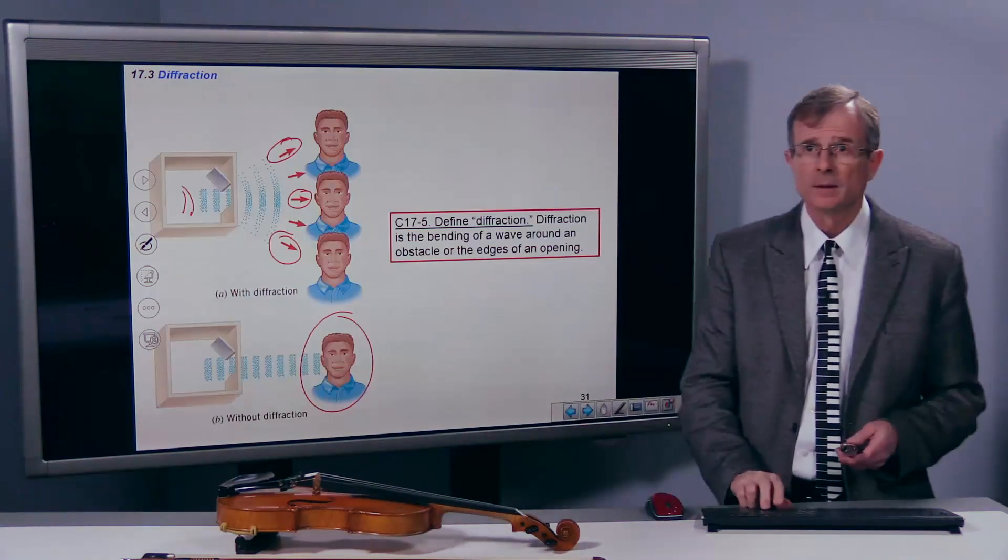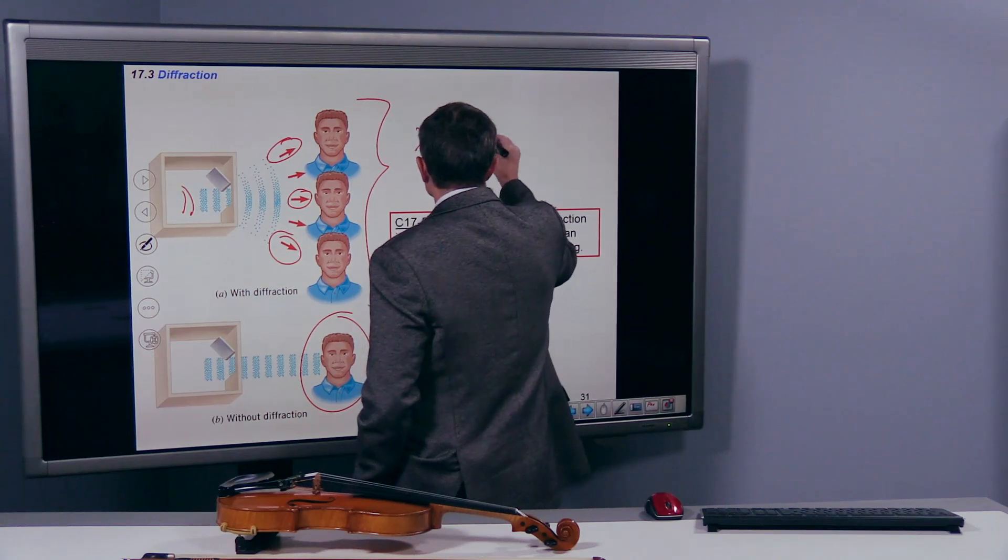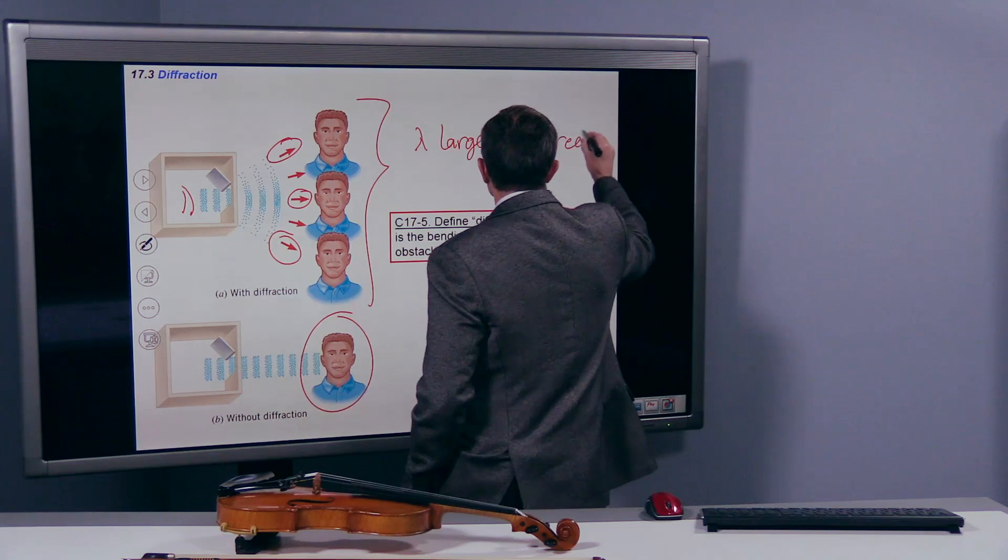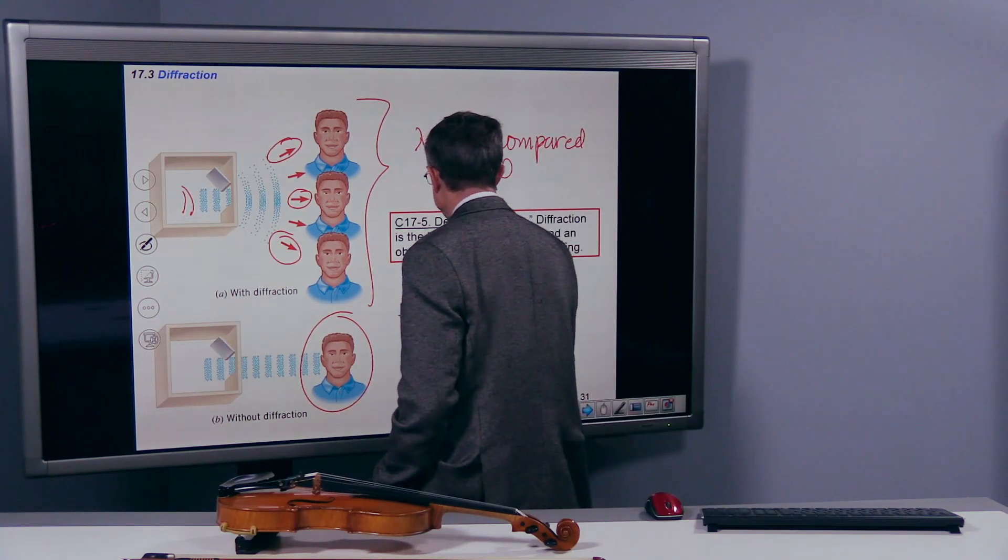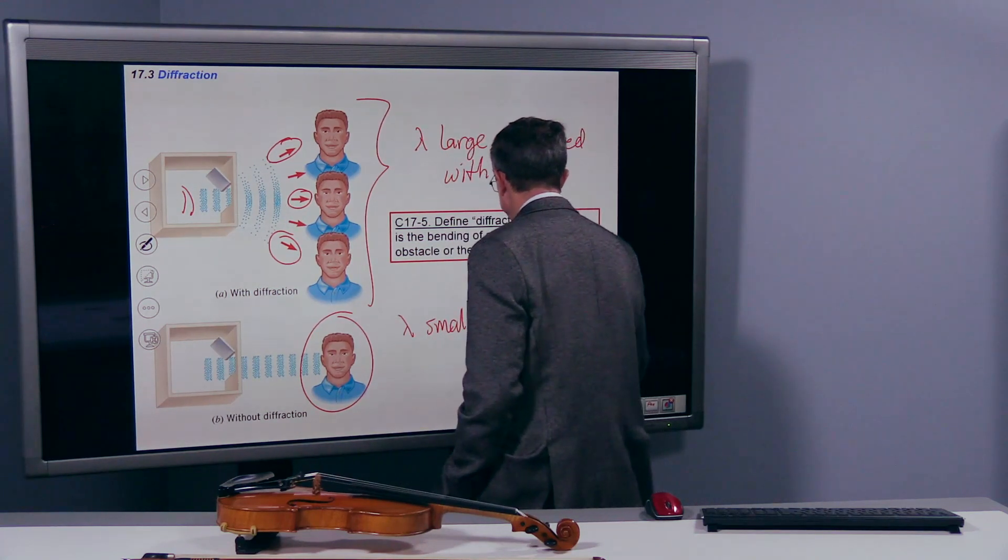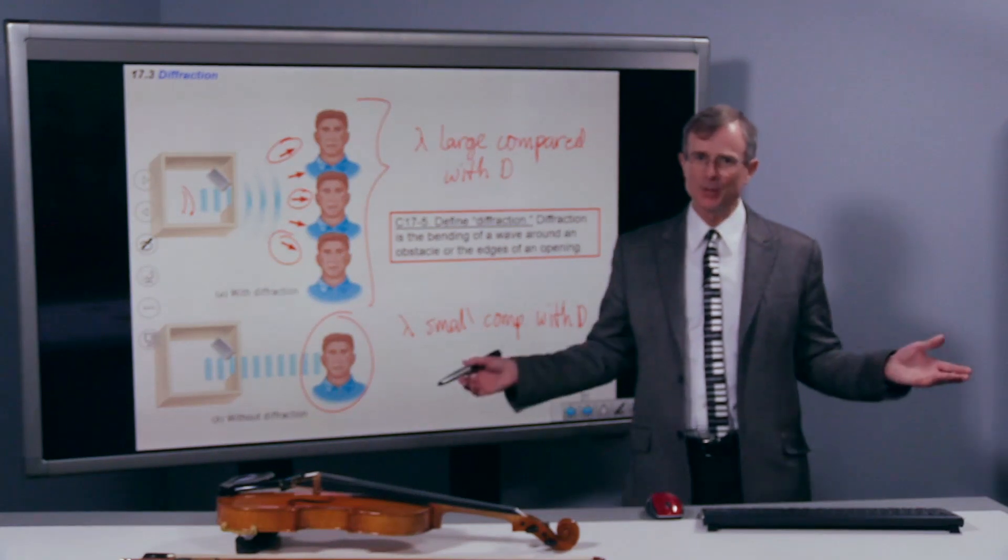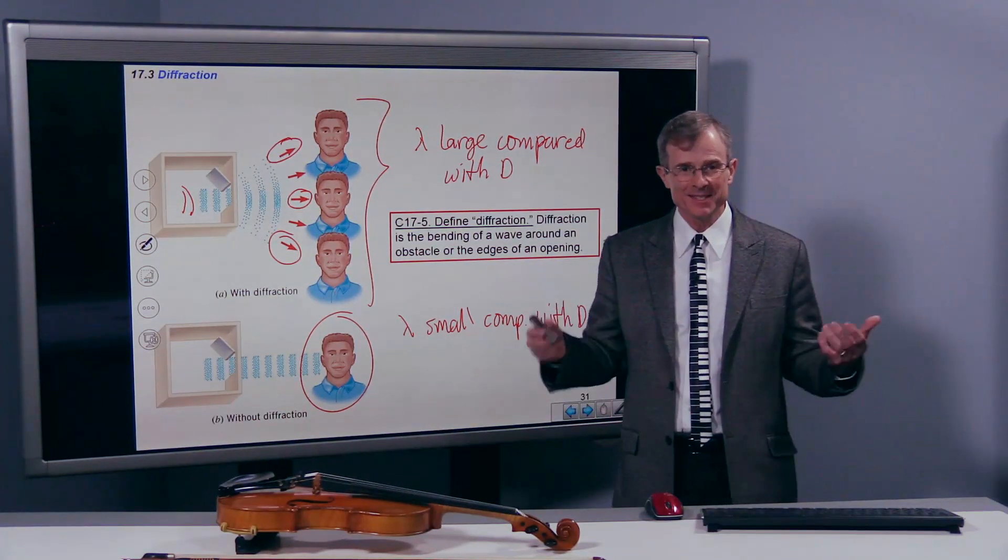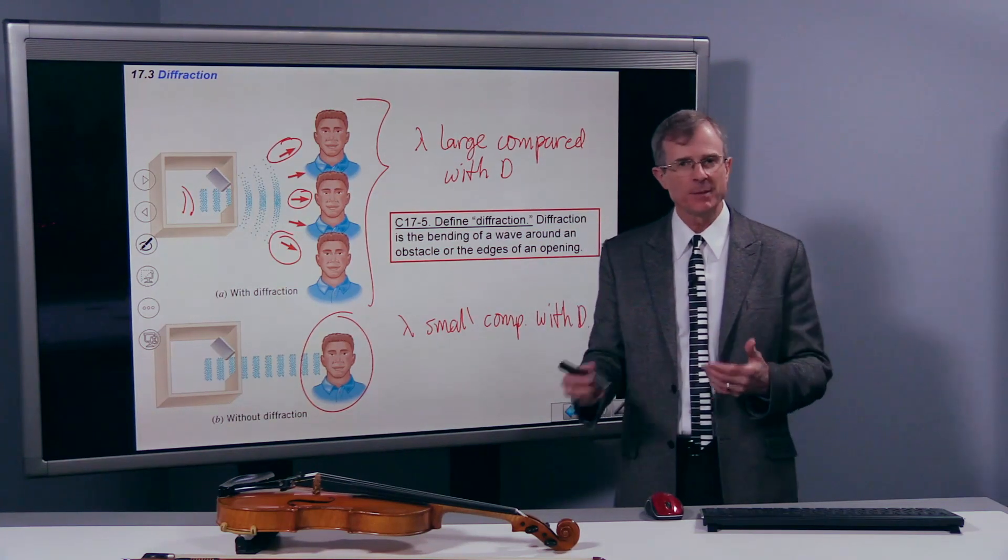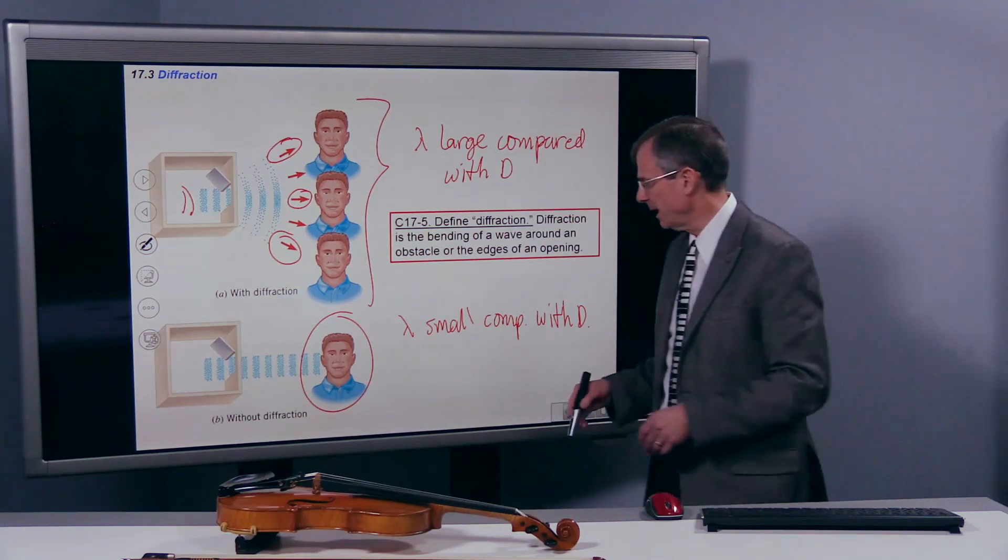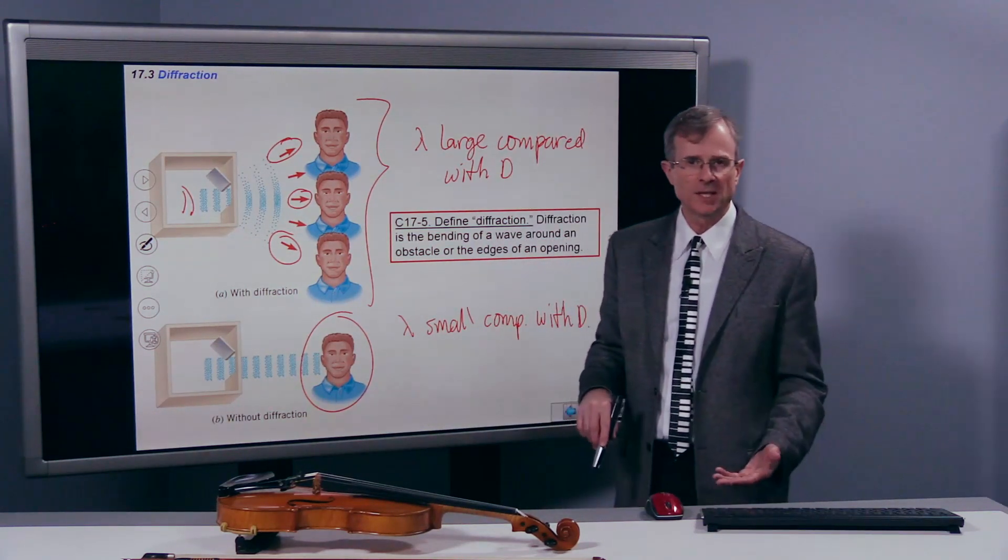So if we go back to this slide, we get lots of diffraction, we get this case if the wavelength is large compared with d. And we get very little diffraction if the wavelength is small compared with d. So this is pretty cool because that says that all I have to know, it doesn't matter what the wavelength is, it matters what the wavelength is compared to d. And if λ is about the same as d, that's about the crossover between getting very little diffraction and getting a significant amount of diffraction. The larger that λ is compared with d, the more diffraction you get.